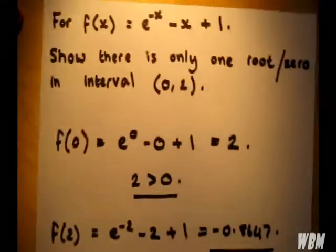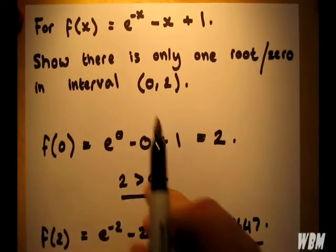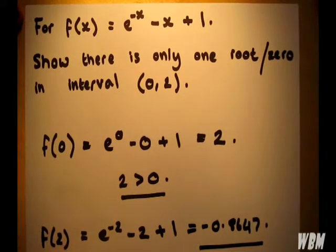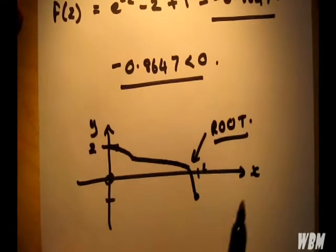However, the question is to show that there's only one root. There's strictly one root. This only shows that there is a root. There could be multiple roots. For example,